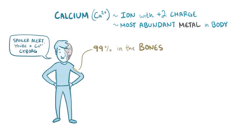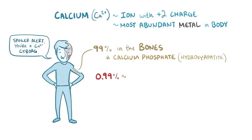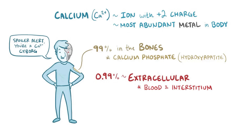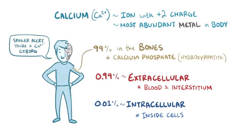About 99% of that calcium is in our bones in the form of calcium phosphate, also called hydroxyapatite. The last 1% is split so that the majority, about 0.99%, is extracellular — in the blood and in the interstitial space between cells — whereas 0.01% is intracellular, or inside cells.